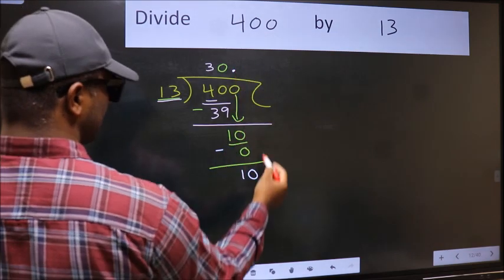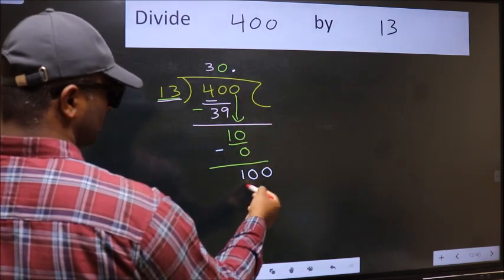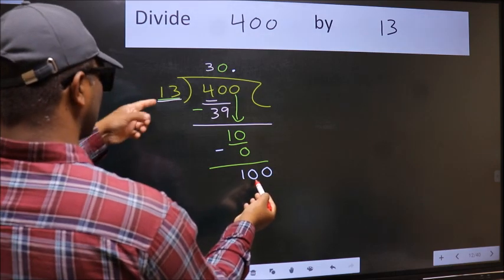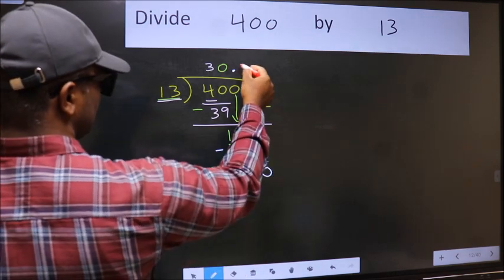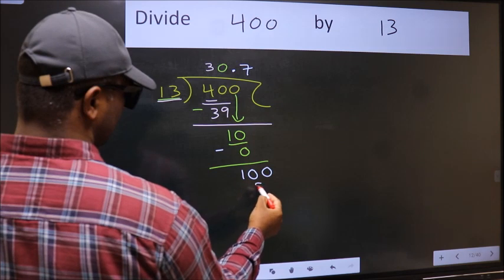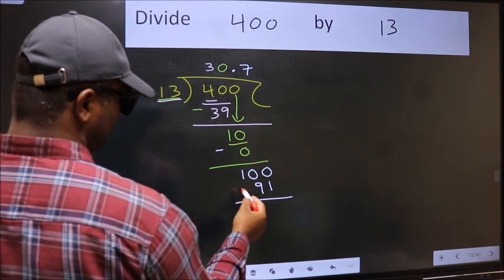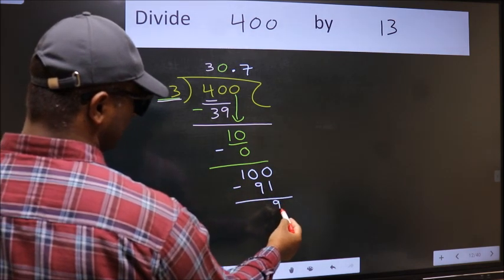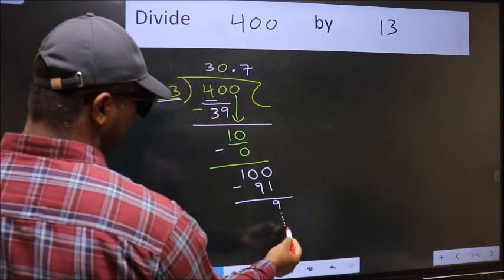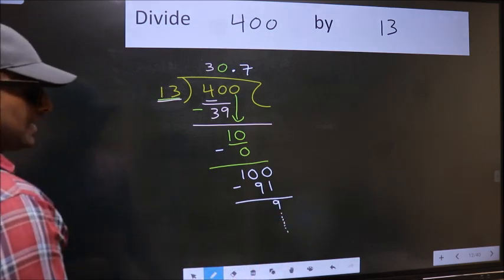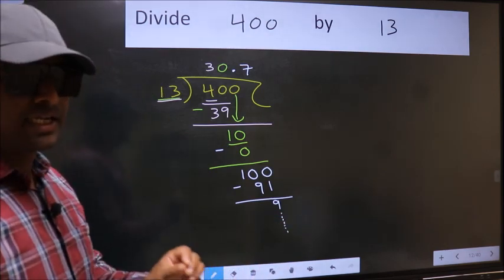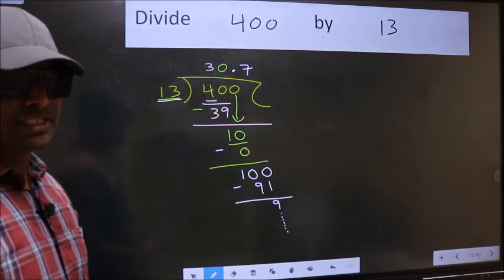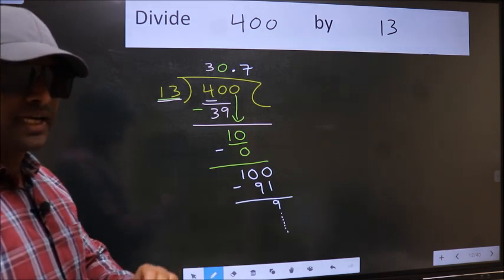So 100. A number close to 100 in the 13 table is 13 sevens, 91. Now we should subtract, we get 9, and you continue the division. I am not doing that. Did you understand where the mistake happens? You should not do that mistake.